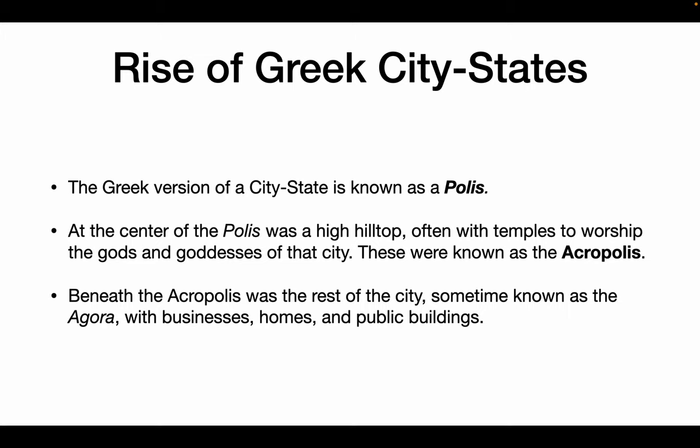What does a Greek city-state look like? A Greek city-state is called a polis. At the center of this polis is a very high hilltop. 'High' in Greek is acro, so an acropolis is the high part of the polis. Oftentimes there is a temple up at the very top meant to worship the god or goddess that is the patron deity of that city, and in desperate times it can also be converted into a fort. Underneath that is the agora — an open space that has businesses, homes, and public buildings. These are the three main parts of just about every Greek city-state: the polis, the acropolis, and the agora.